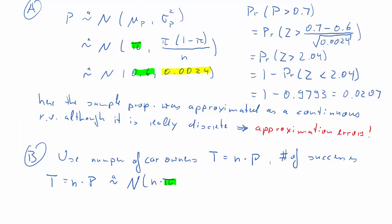So, that is going to be normally distributed with n times π, and that is just the probability of success. And the variance, n squared, times the variance of P̂.